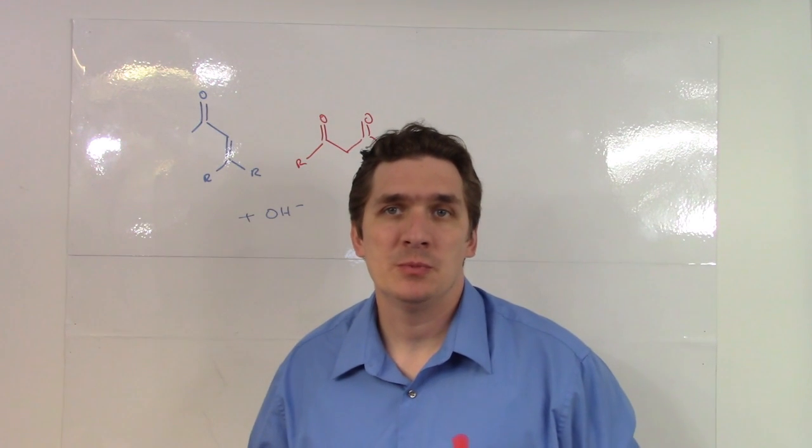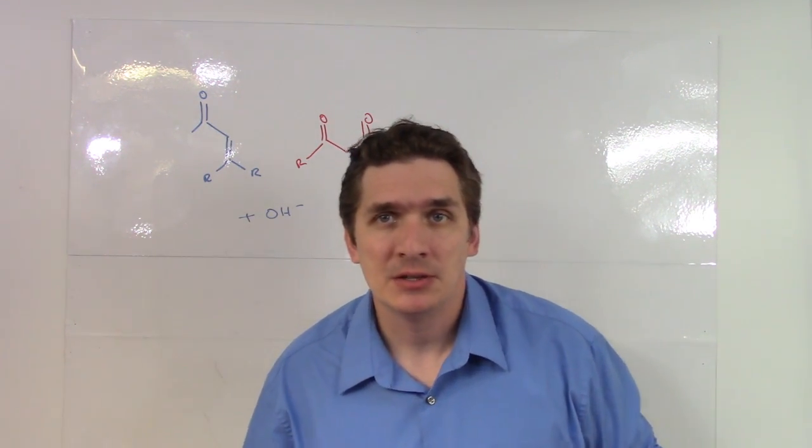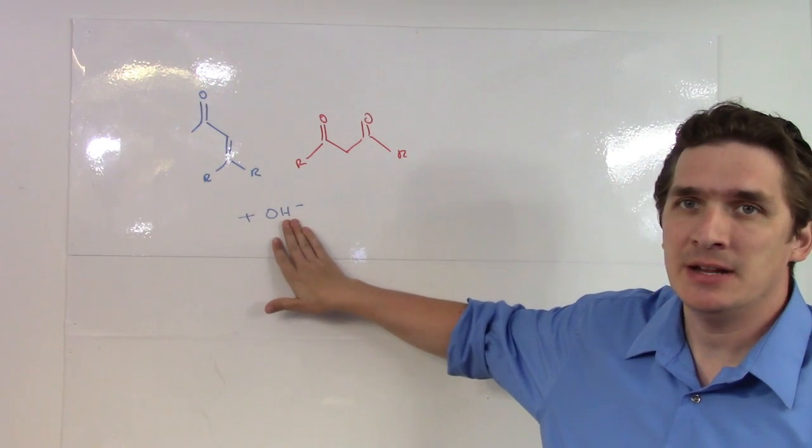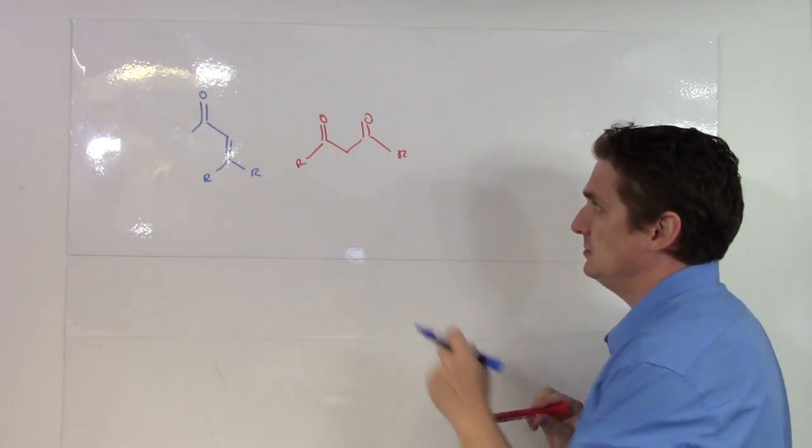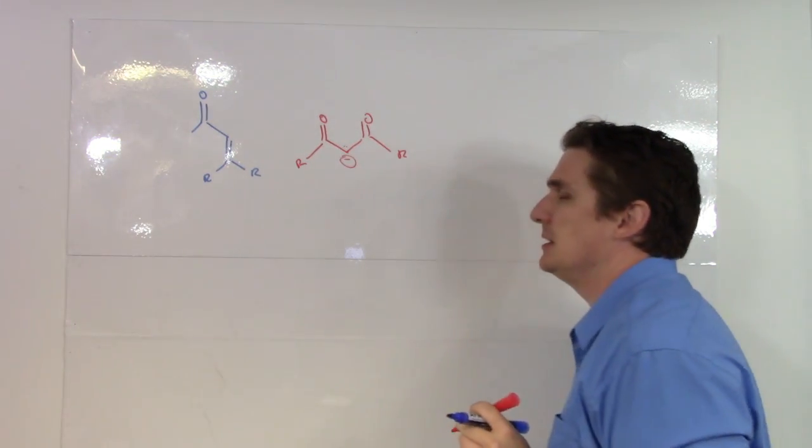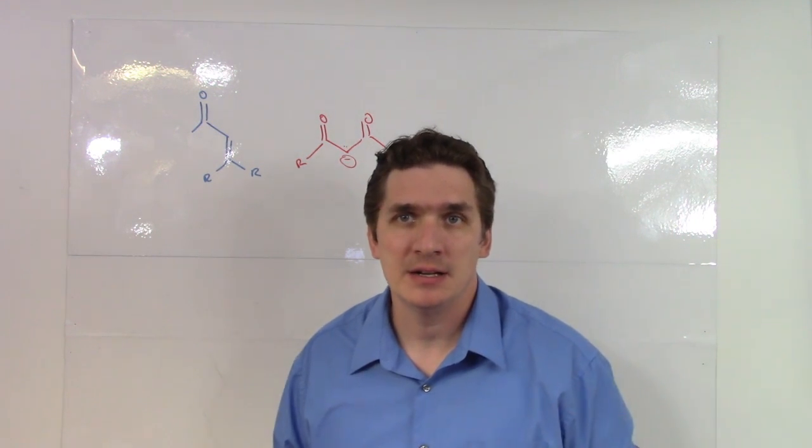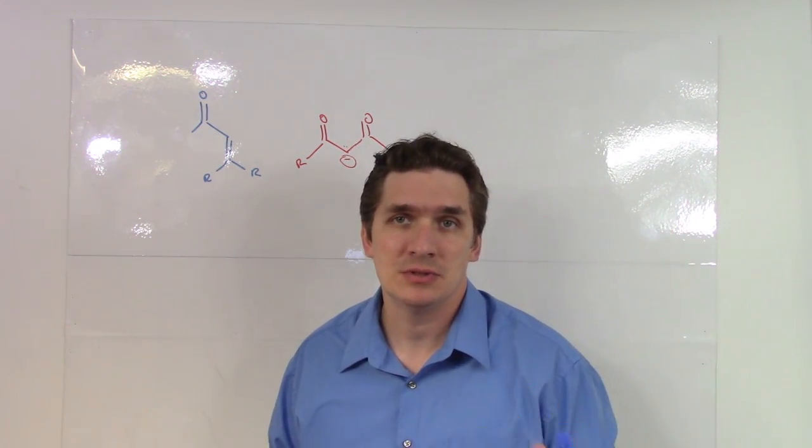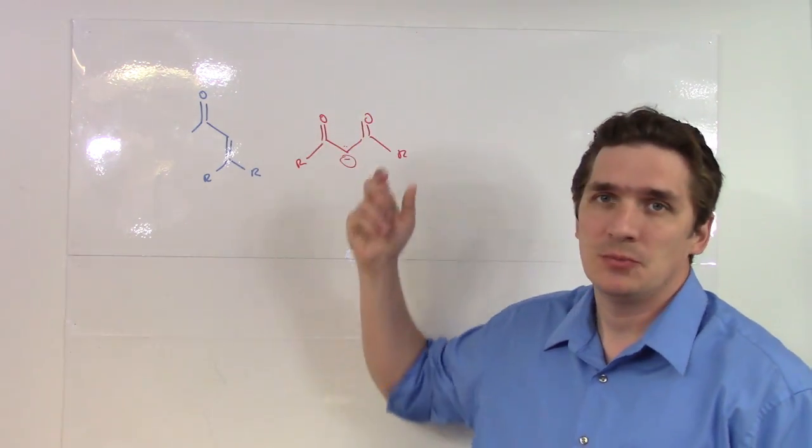This is what we need to perform what is called the Michael reaction. So in the Michael reaction what initially happens is this hydroxide eliminates the hydrogen from this diketone to give us the carbanion which is stabilized through resonance through the tautomerization with these two or resonance with these two.